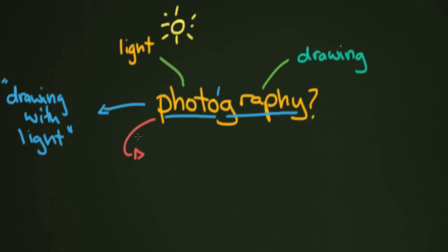I took a really quick look in Google and came across a definition in the World English Dictionary. It has two pieces. The first piece is basically saying light, or some sort of ray — they mentioned x-ray as well. Light plus film equals photography.